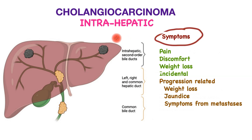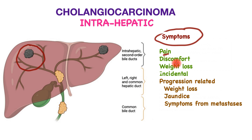Typically, intrahepatic cholangiocarcinomas do not cause many symptoms initially. It is only when these increase in size that symptoms may arise. These may include pain especially in the right upper quadrant below the ribcage, and discomfort specifically on bending. As the tumor progresses it may cause weight loss. It is not uncommon for these cancers to be found incidentally when a scan is performed for other reasons.